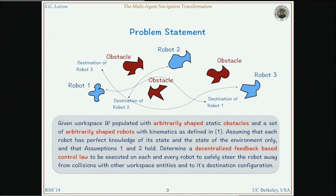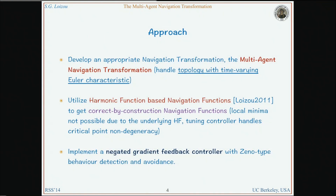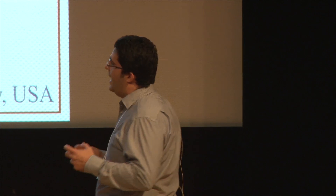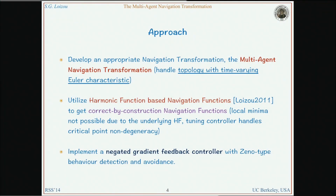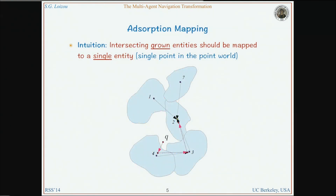We are assuming holonomic kinematics for the robots, with two assumptions about the destination configurations and the existence of smooth distance metrics. There is a major issue having to do with the time-varying topology: the Euler characteristic of our workspace is changing because we have grown workspace entities that are moving and intersecting other entities. We must develop an appropriate transformation mapping this topology to a domain where we can construct a harmonic function-based navigation function, giving a correct-by-construction solution without the need to tune for local minima.